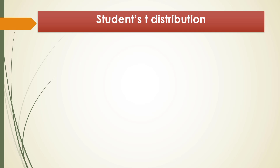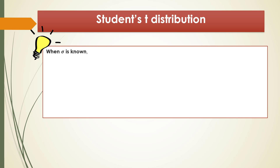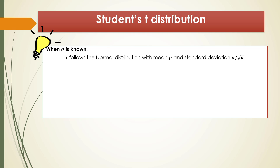First, the student t distribution. Remember in the last video, when sigma is known, we have x-bar, the sample mean, follows the normal distribution approximately with mean mu and standard deviation sigma over square root of n. And the confidence interval for the population mean is x-bar plus or minus z_{α/2} times sigma over square root of n.